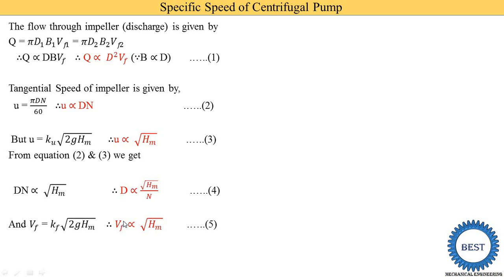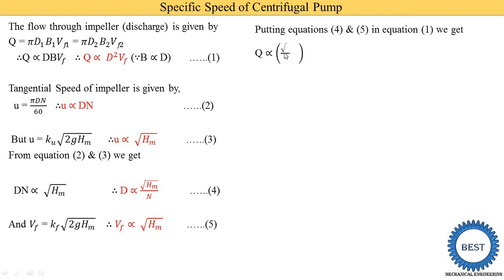Now we substitute equations 4 and 5 into equation 1: Q ∝ D²·Vf. Substituting D = √Hm / N and Vf = √Hm, we get Q ∝ (√Hm / N)² × √Hm. Opening the bracket: (√Hm)² = Hm and N² remains. In the numerator, Hm × √Hm = Hm^(1 + 1/2) = Hm^(3/2). So Q ∝ Hm^(3/2) / N².